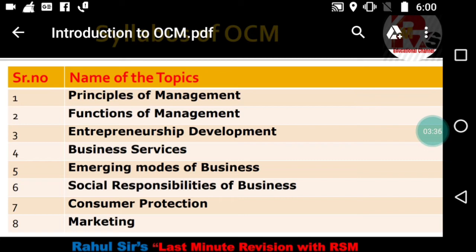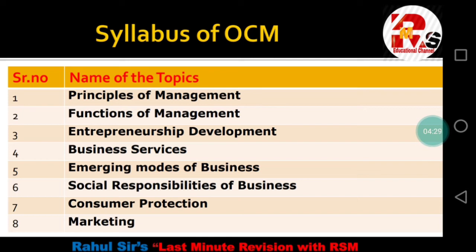The next chapter is Emerging Modes of Business, where we will learn about e-business and electronic commerce. The e-commerce sector is growing rapidly — we use Flipkart, Amazon, and similar websites. We will understand the online transaction process and study BPO (Business Process Outsourcing), KPO (Knowledge Process Outsourcing), and LPO (Legal Process Outsourcing) in detail. The syllabus includes many new and productive concepts relevant to today's market.